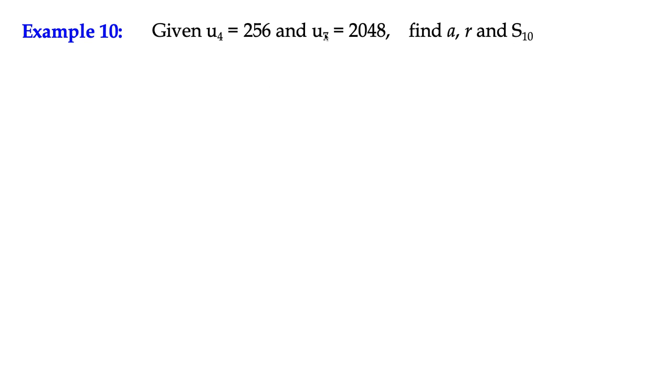The first thing we need to realize here is that we don't have two consecutive terms, so we can't just make a fraction from these two values to get the common ratio. We have to be careful here.